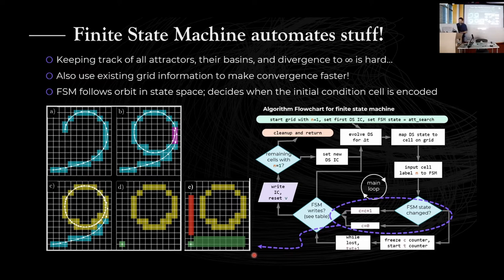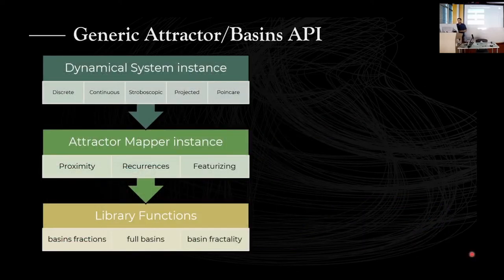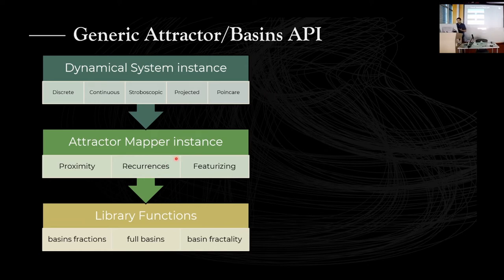We have made a generic modular interface to use these methods. You first decide what kind of dynamical system you want — ranging from discrete systems all the way to Poincaré maps. Then you decide what method to use to find attractors: the recurrence-based method, the feature-clustering method, or just use the existing library functions that compute the basins of attraction directly.